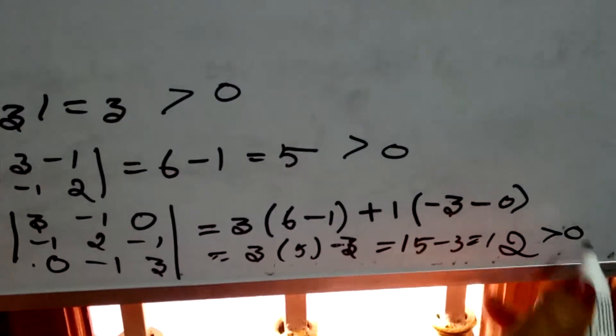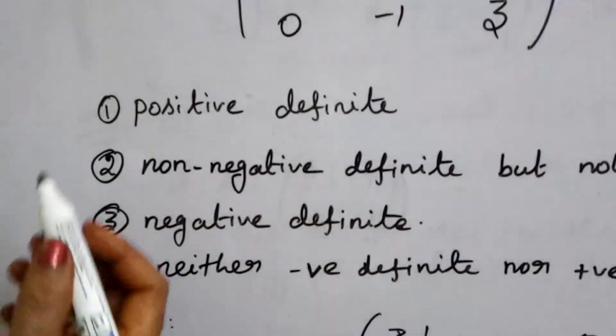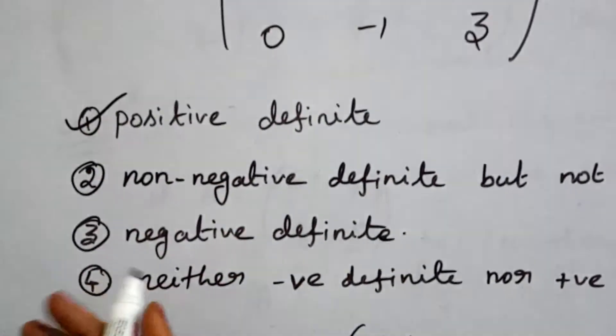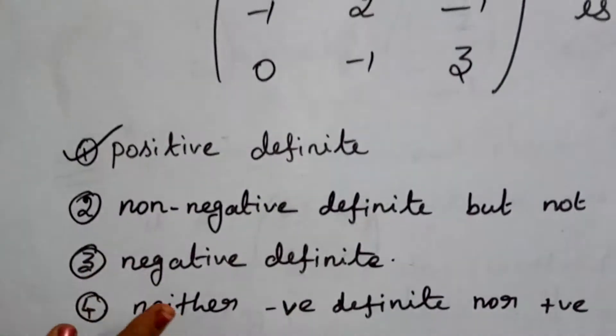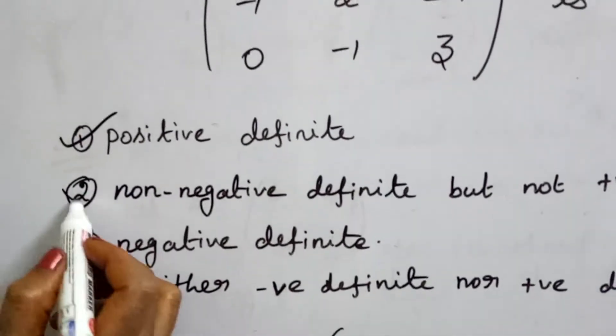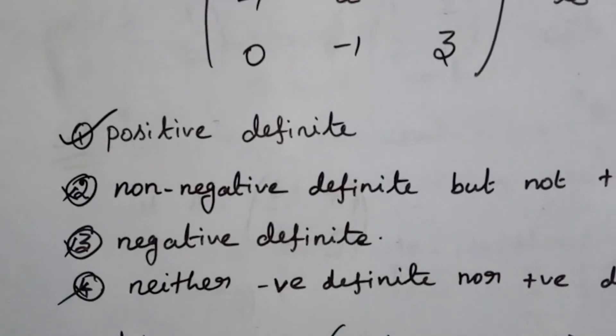Since all leading principal minors of order 1, 2, and 3 are positive, the given matrix is a positive definite matrix. This is a 3-mark question with the answer confirmed.